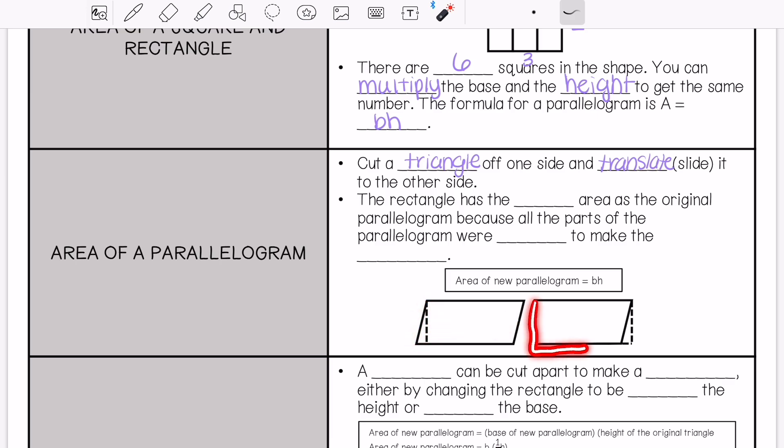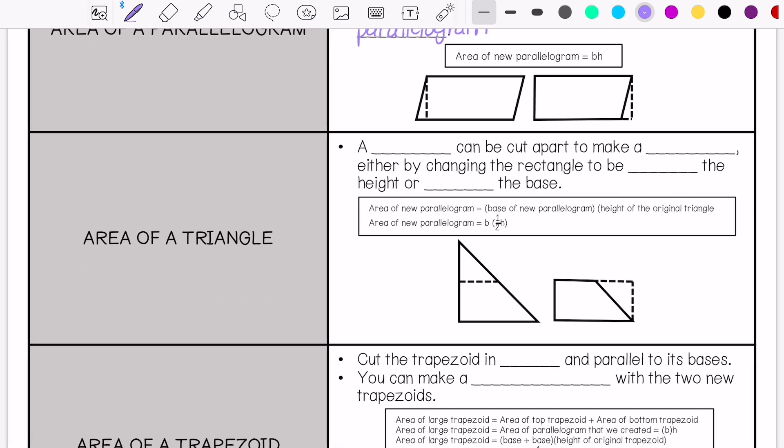When we slide it to the other side, it makes it look like a rectangle. The rectangle has the same area as the original parallelogram because all parts of the parallelogram are used to make that rectangle. The formula for the area is still base times height.